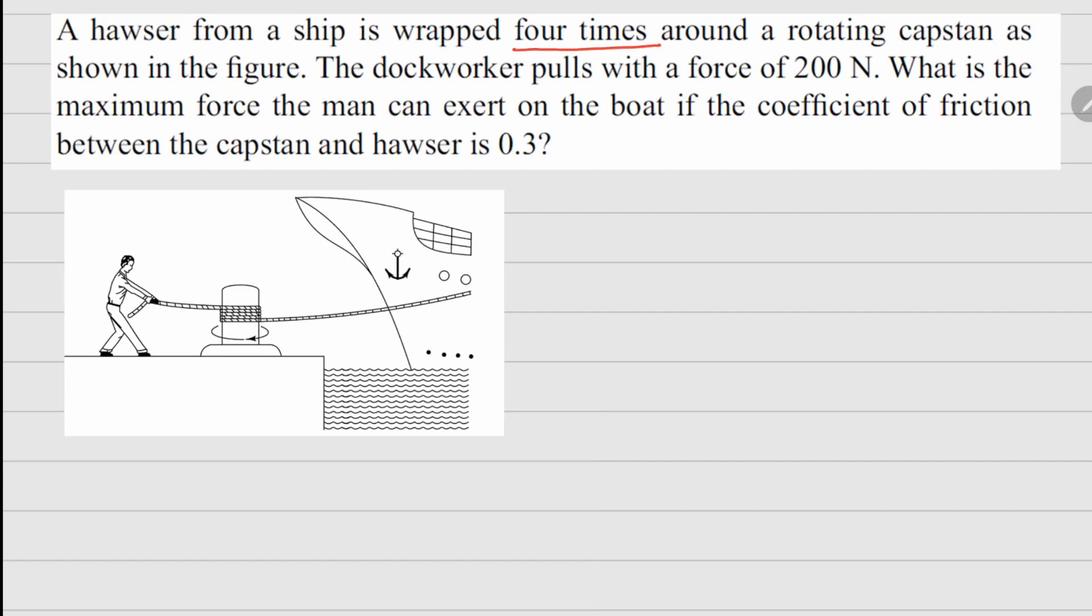The dock worker pulls with a force of 200 newtons. So basically the force here is 200 newtons. What is the maximum force the man can exert on the boat if the coefficient of friction is 0.3? So we are looking for this force right here.